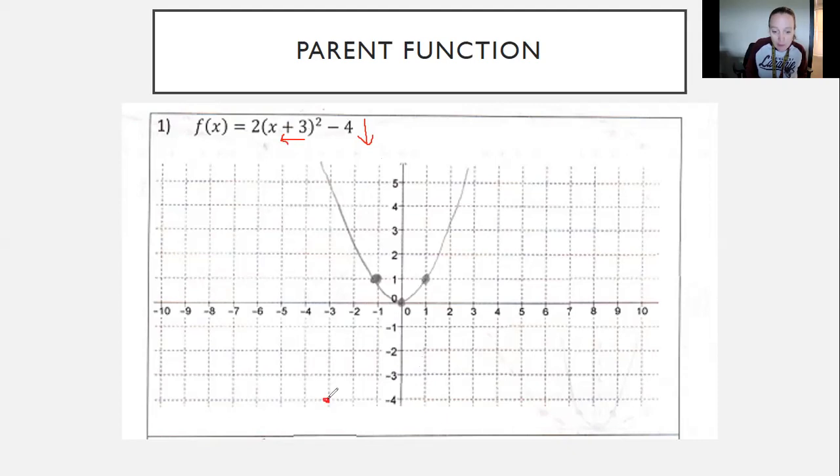Now if there was no number out front multiplying then I could just go up one to the right one and up one to the left one and there would be my new points. But that's not the case. I now have this two out front and that two is going to be a shrink or it squeezes that graph in the vertical direction and so I now have to look at this and I have to say okay my new critical points from the vertex are going to be up two to the right one and then up two to the left one.